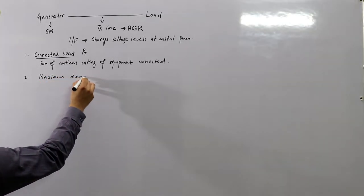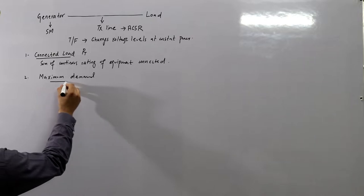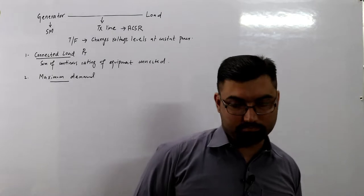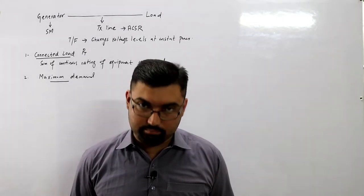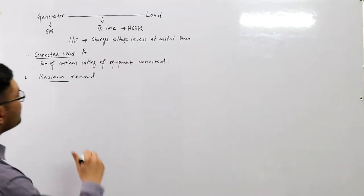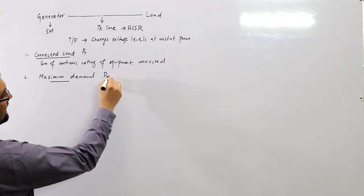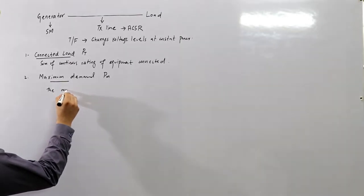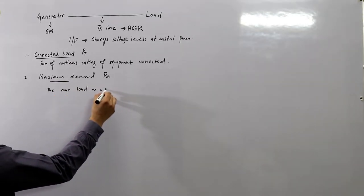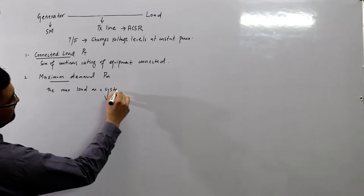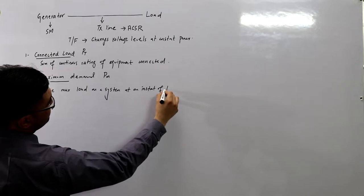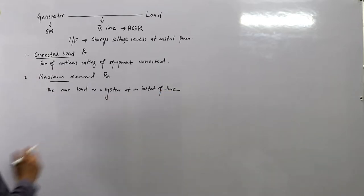The next term is maximum demand, denoted by PM. It is the maximum load on the system at any instant of time. This can be on a daily, monthly, or annual basis.